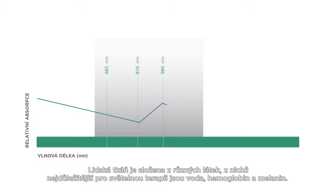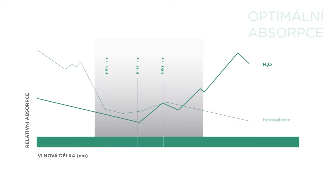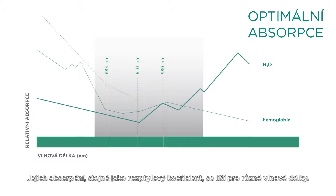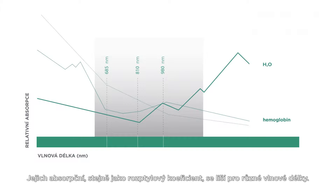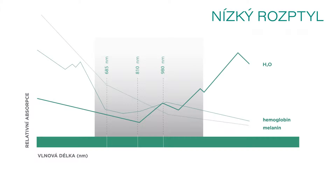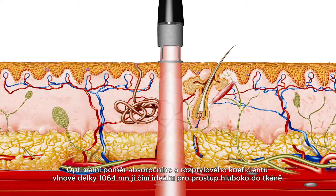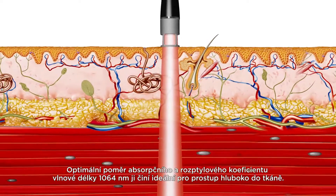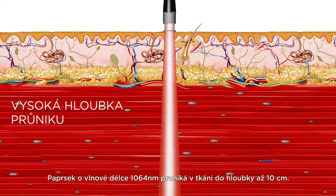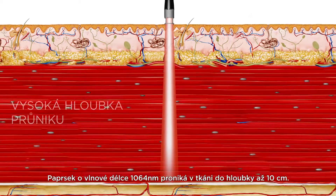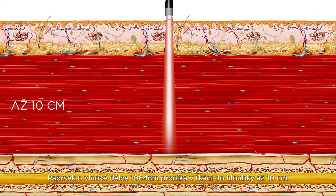Human tissue is composed of various components, of which the most important for laser irradiation are water, hemoglobin and melanin. Their absorption, as well as the scatter coefficient, are different for different wavelengths. The optimum scatter-to-absorption ratio of the 1064 nanometer wavelength makes it ideal for deep tissue penetration, with a beam capable of reaching up to 10 centimeters deep into the tissue.